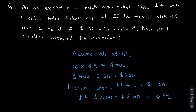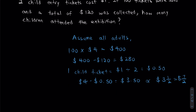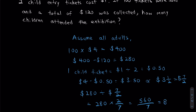I can rewrite $3.50 as 7/2 to make calculations easier. Now, you might be confused — assumption questions, when do we have fractions? But the method is exactly the same. We take the total difference, which is $280, divided by the difference in the cost of one ticket, which is 7/2. This can be rewritten as 280 times 2 over 7, which equals 560 divided by 7, which equals 80. And what is this 80? It is the number of children.